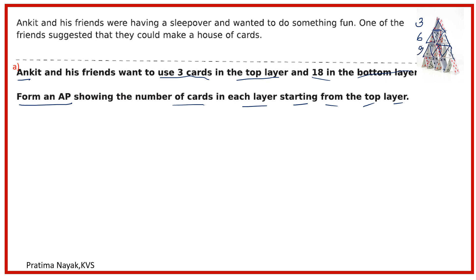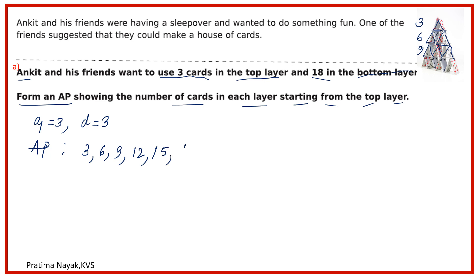So the first term a is equal to 3 and the common difference d is equal to 3. Therefore the AP is: 3, 6, 9, 12, 15, 18. You get one mark for this.